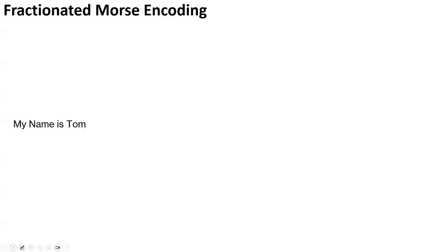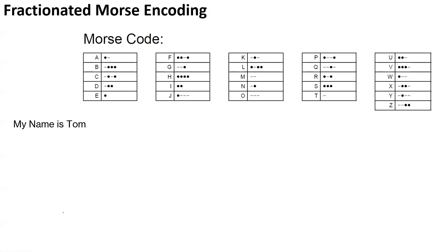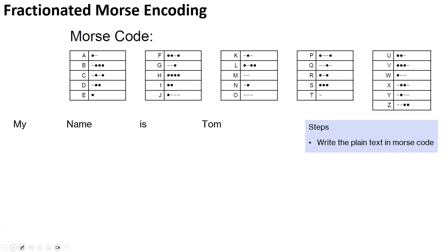So we have a simple sentence: 'My name is Tom.' And to start encoding, we need the Morse code table. And the first part of this process would be to write the plain text in Morse code. So that's what we are going to do. And I just spread out the sentence so that the Morse code is below each of these words.